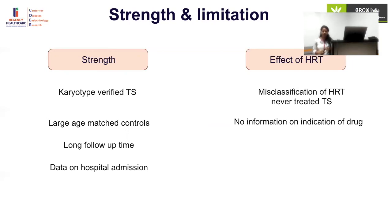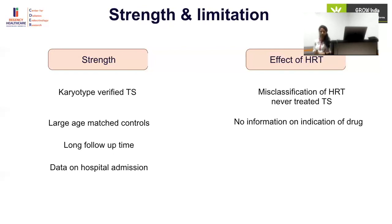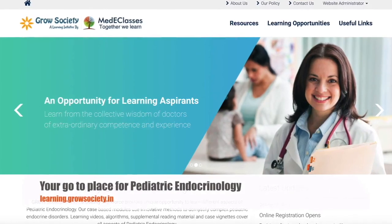Of 394 eligible patients, 285 were treated and 44 were untreated, meaning many patients were not included. There was also no information on the indication for drugs like anti-hypertensives and other medications, which may have been prescribed for other indications.